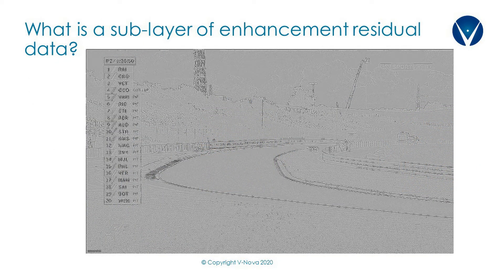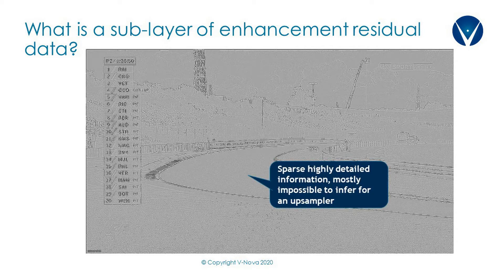What is a layer of residual data? You see an example here. It's sparse but very detailed information that cannot be inferred by an upsampler. It's very hard to encode using a traditional block-based approach, but it's very important — it's what makes the difference between, for example, HD and Ultra HD.